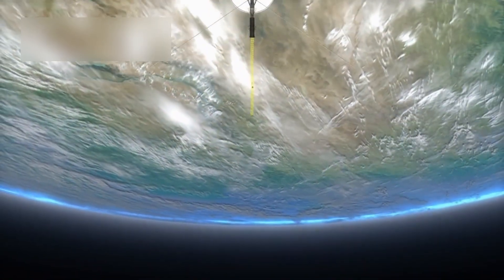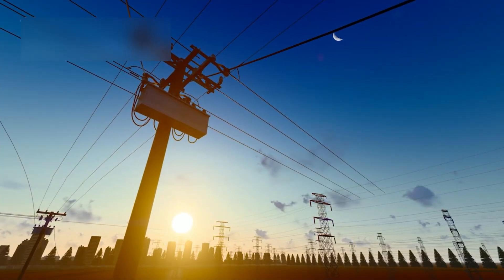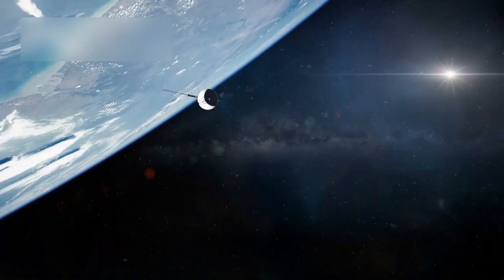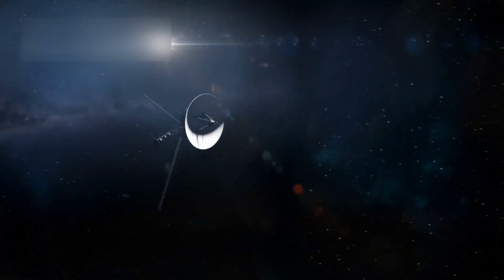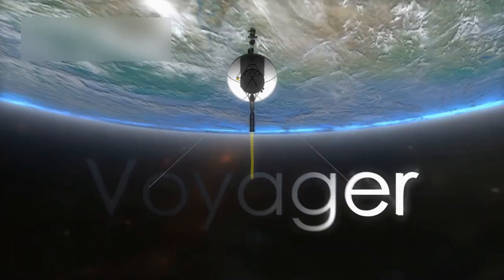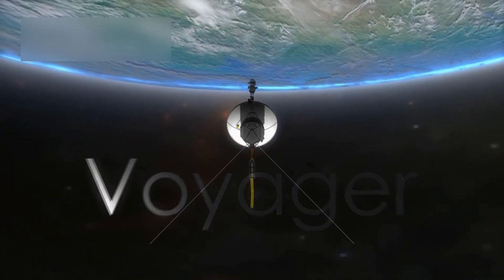The spacecraft continues to face serious challenges. Communication with Earth takes about 19 hours one way, and its power supply is dwindling. To save energy, NASA has had to shut down non-essential systems, leaving only the most critical instruments running. Still, Voyager 1 keeps transmitting valuable data, proving how well it was built.